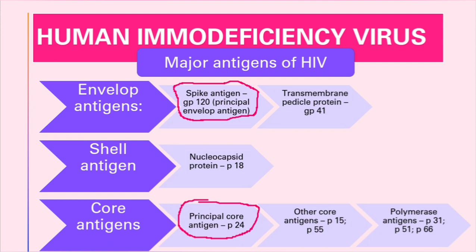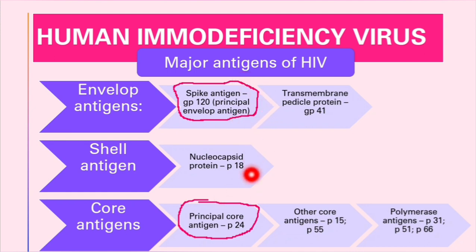For core antigens, we have the principal core antigen, that's p24 — this one you need to track again because it's very important. Other core antigens include p15 and p55. Polymerase antigens include p31, p51, and p66. Remember especially these two: gp120 and the principal core antigen p24, and also gp41 — both gp120 and gp41 are coded for by the env gene.